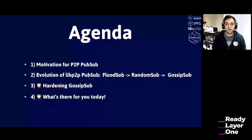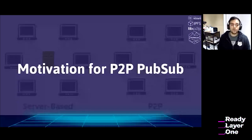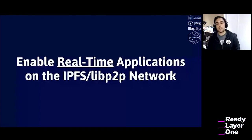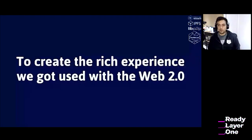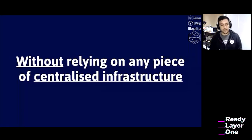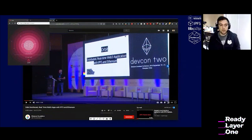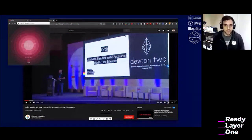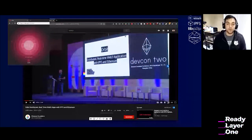So what is the motivation for peer-to-peer PubSub? When we built IPFS and libp2p, we wanted to enable real-time applications to work on the network. We wanted to enable developers to build the rich experience that users got used to in the web 3.0 world, and we wanted to do it without relying on any piece of centralized infrastructure — people could connect to each other and propagate updates in real time. Our first experiment was really Orbit Chat, back in 2016 at DefCon 2, the first user of libp2p PubSub.